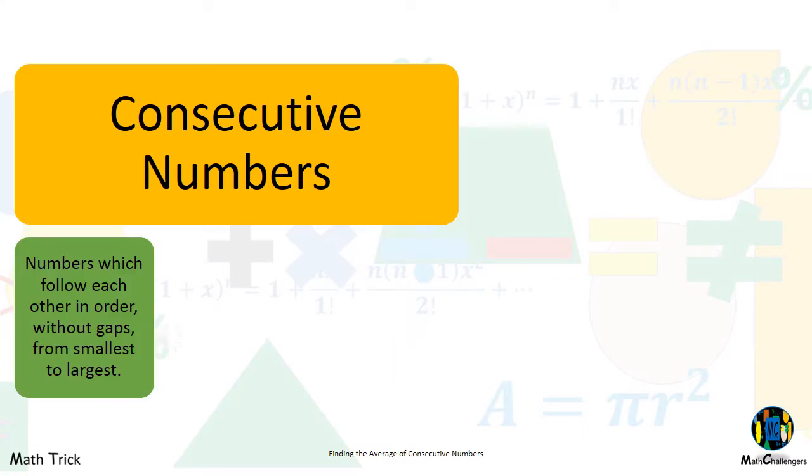Consecutive numbers are numbers which follow each other in order, without gaps, from smallest to largest.